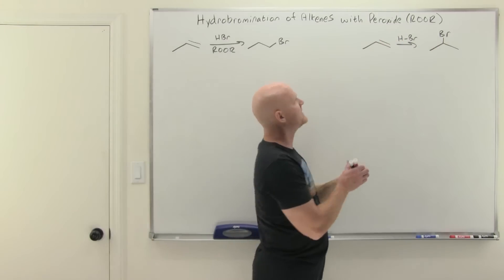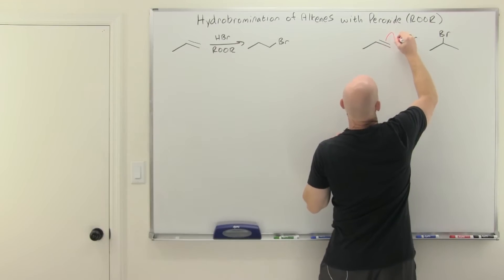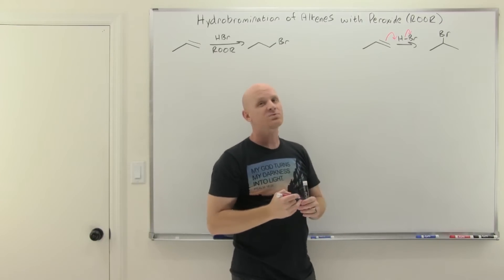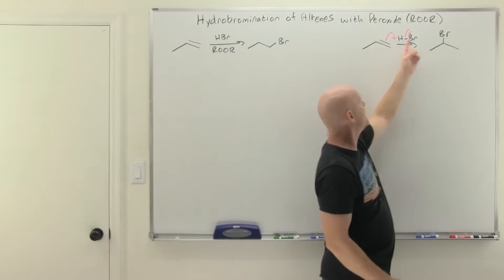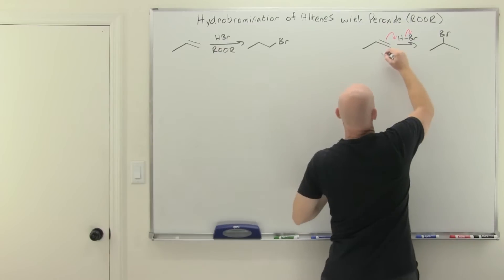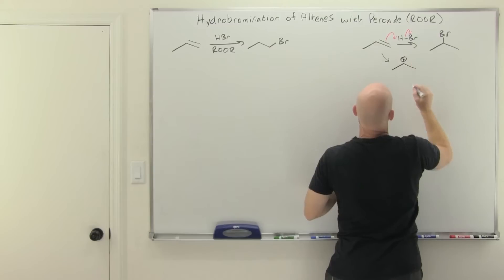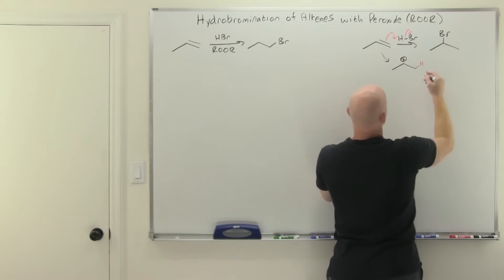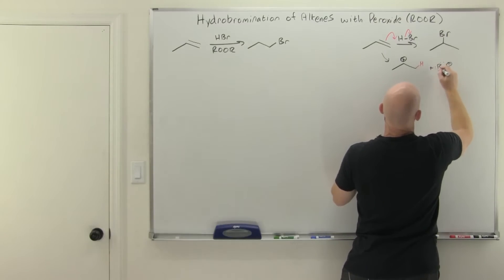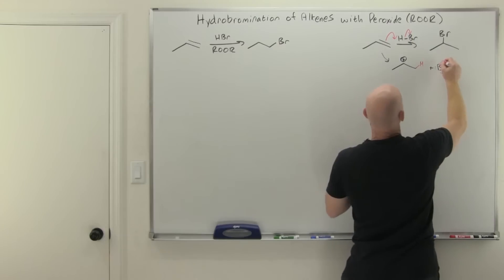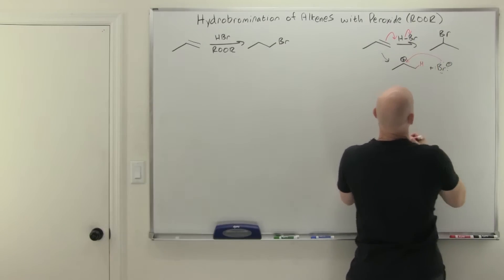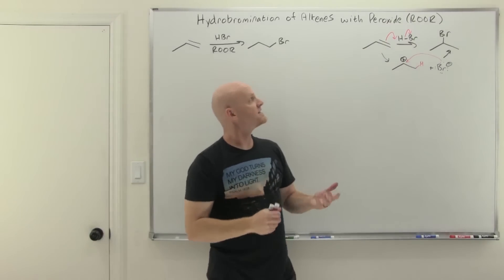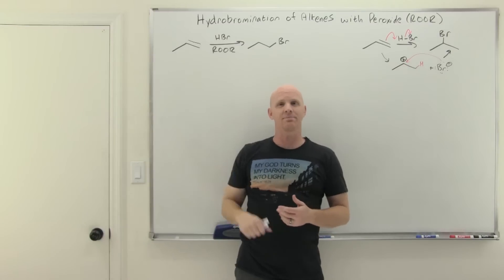Looking back at the carbocation mechanism for plain HBr addition: the alkene first attacks the hydrogen. The first thing that reacts with the alkene ends up on the less-substituted side — that H ends up on the less-substituted carbon, giving us the more-substituted, more-stable carbocation intermediate. It is that bromide ion that then comes in and attacks second to form the final product. The key point: the first thing that reacts with the alkene ends up on the less-substituted side.